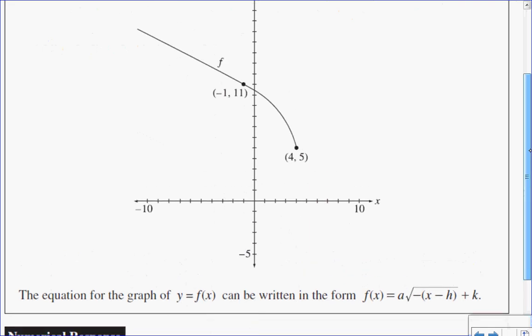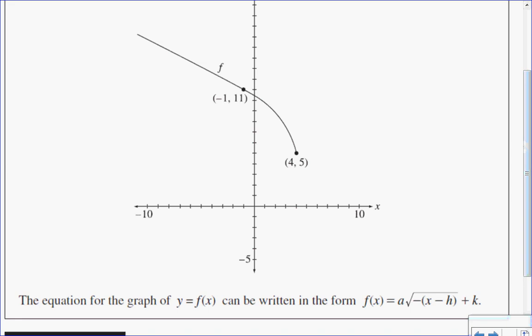So what I need to know is something about my base function. If I look at just the graph of the base function of square root of x, I know that that's a graph that starts right at the origin, and it opens to the right like that.